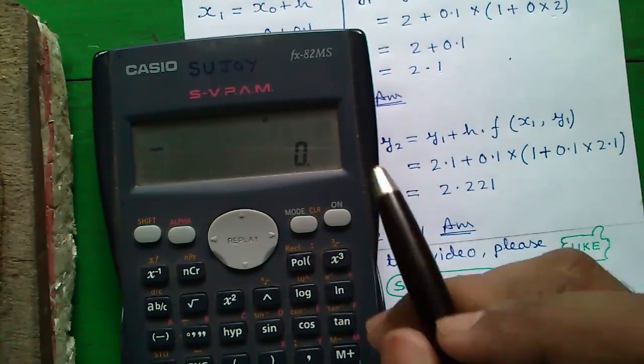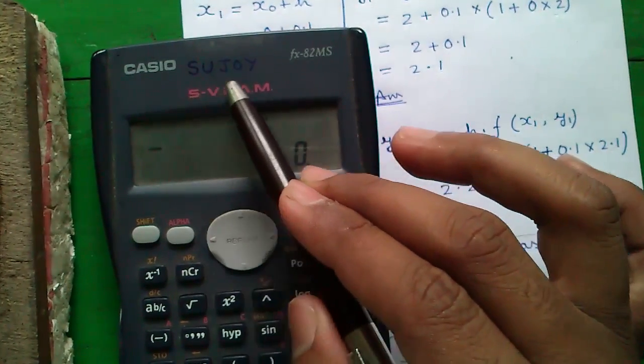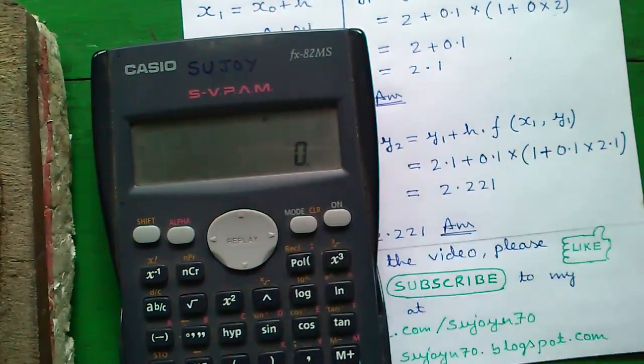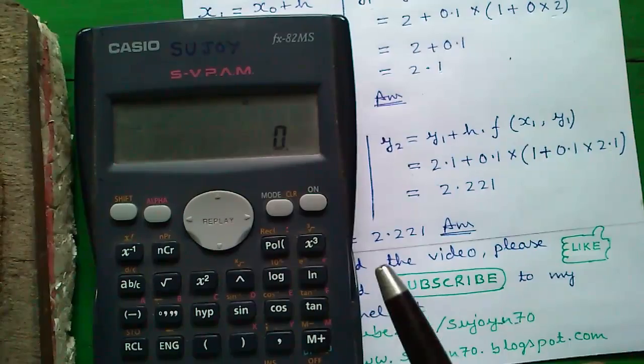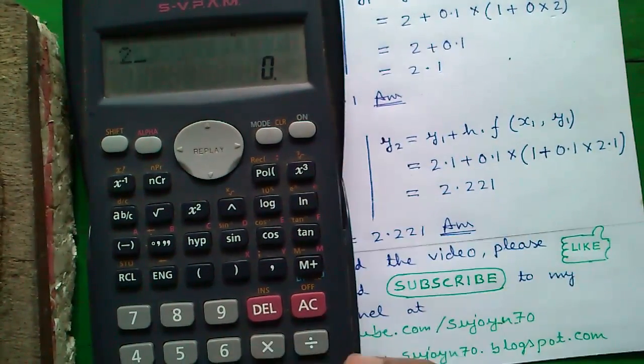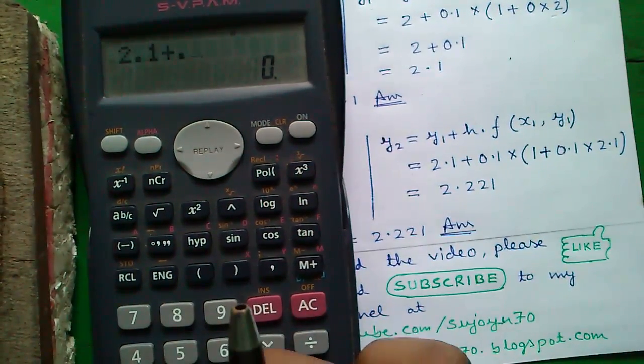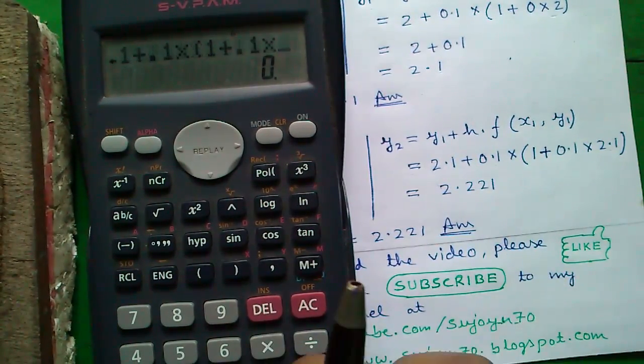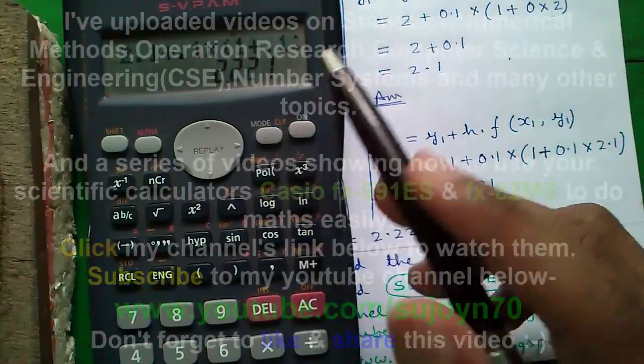You can directly enter the expressions because this supports VPAM, that means Visually Perfect Algebraic Method. The technique which allows you to enter expressions directly into the calculator without breaking up. So 2.1 plus 0.1 into 1 plus 0.1 into 2.1 that is 2.221.